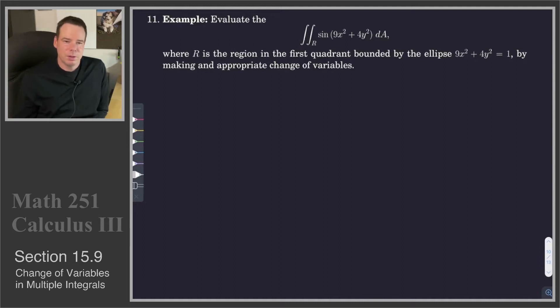Let's have a look at another example of a change of variables. In this case we're going to have to come up with a change of variables on our own. So we want to evaluate this integral over the region R, where R is the region in the first quadrant bounded by the ellipse.